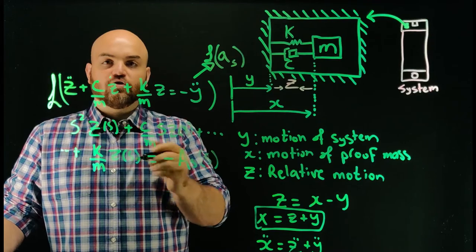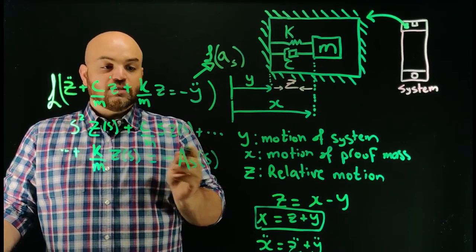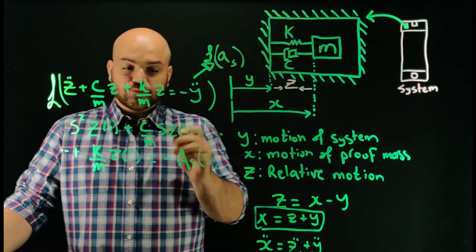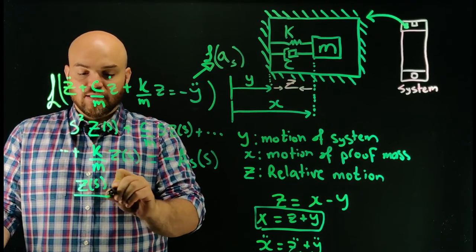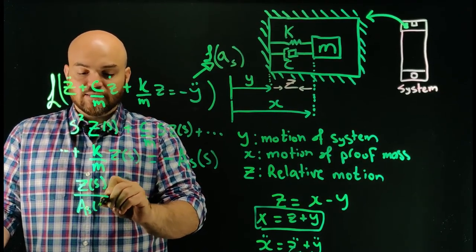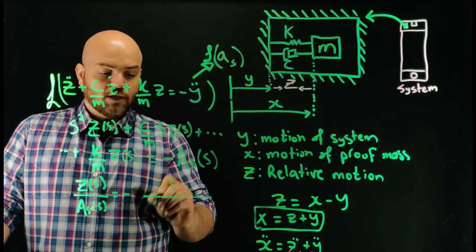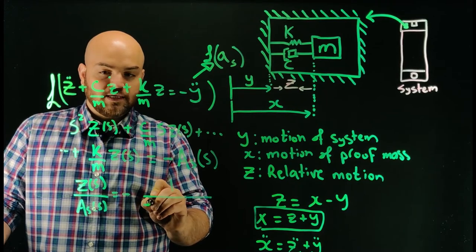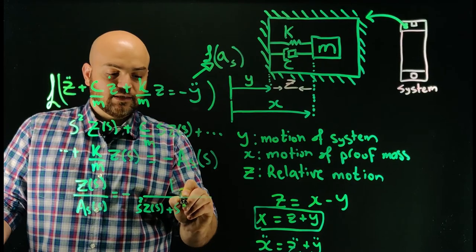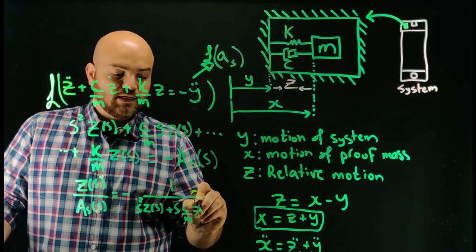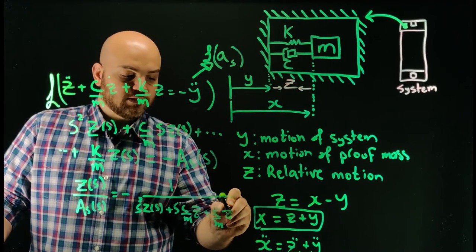Using capital letters to differentiate time-domain from S-domain variables, I can rearrange to write the transfer function Z(S)/A(S) = −1 / [S² + S·(C/M) + K/M].